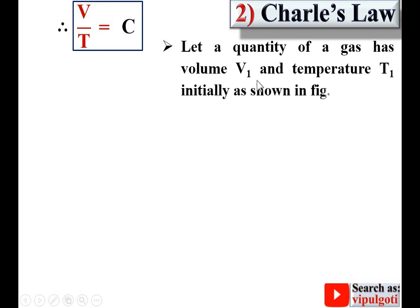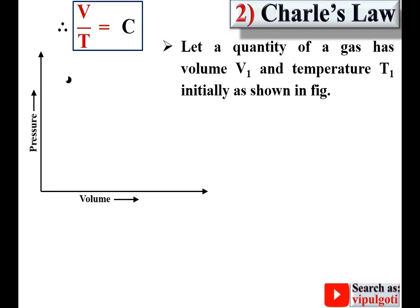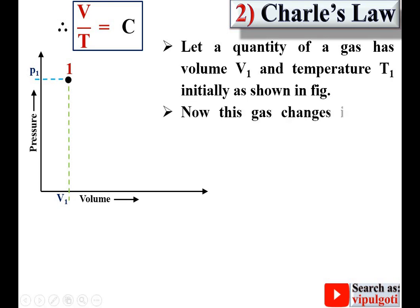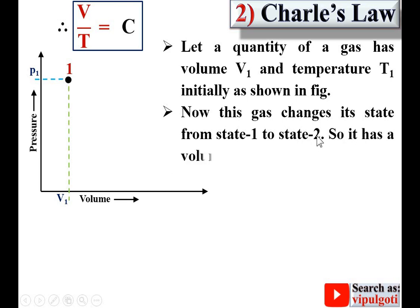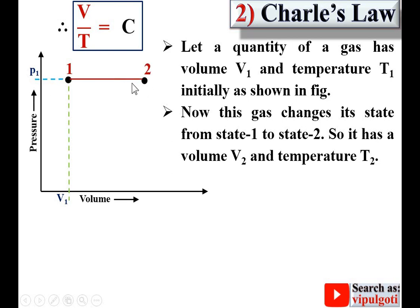Let a quantity of gas have volume V1 and temperature T1 initially. On the pressure-volume diagram, this is state 1. Now this gas changes its state from state 1 to state 2, having volume V2 and temperature T2. Since pressure is constant, the process is represented by a horizontal line. At state 2, pressure P2 equals P1 because both are at the same level, and the volume is V2.